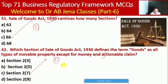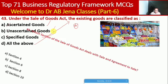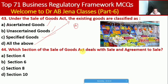Next MCQ: under the Sale of Goods Act, existing goods are classified as what? Whether ascertained goods, unascertained goods, specified goods, or all of the above. Here D is the right option. Next MCQ: which section of the Sale of Goods Act deals with sale and agreement to sell? Whether Section 4, 6, 8, or 10. Here A is the right option — Section 4 of the Sale of Goods Act deals with sale and agreement to sell.